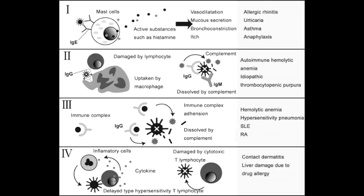Name all the type 1 hypersensitivity reactions. Type 1 hypersensitivity reactions include anaphylaxis due to bee stings and some food or drug allergies such as peanut allergy, as well as allergic or atopic disorders such as rhinitis, hay fever, eczema, hives, and asthma. One thing to note is that type 1 hypersensitivity reactions happen immediately after exposure to the antigen.